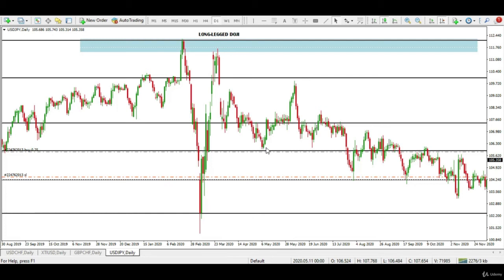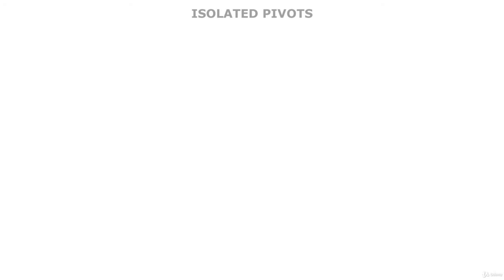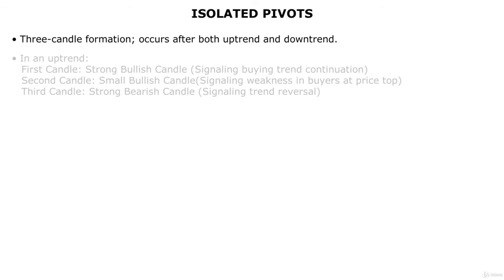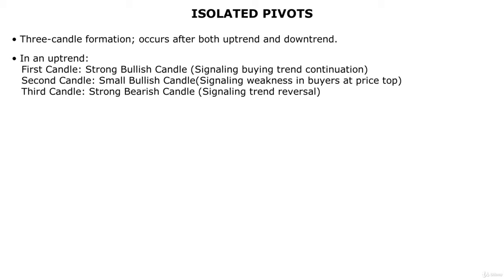This concludes the examples of long-legged doji as we continue to the last key candlestick pattern in this strategy: isolated pivots. This is a three-candle formation seen after both an uptrend and a downtrend. To understand isolated pivots in an uptrend, imagine a market progressing in an uptrend and then a candle with a small real body reveals possible weakness. This second candle is bullish in color but has a very small real body and small lower or upper tails.